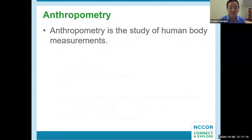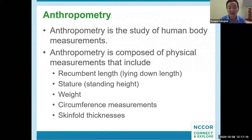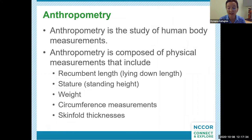Anthropometry is the study of human body measurements that provide information on body size and dimensions. Anthropometry is composed of physical measurements that include recumbent length for very small children who cannot stand, or stature for children who can stand, weight, and regional dimensions including circumference measurements and skinfold thicknesses.